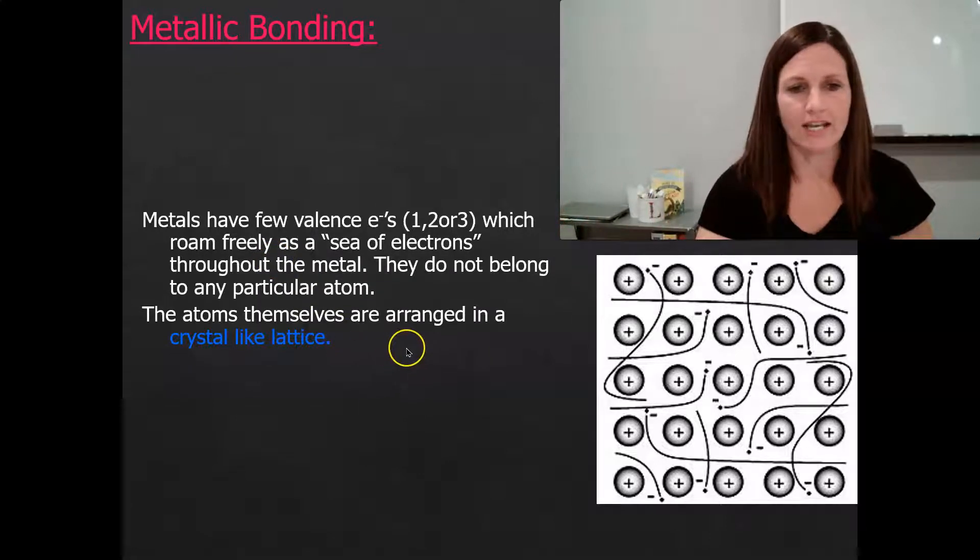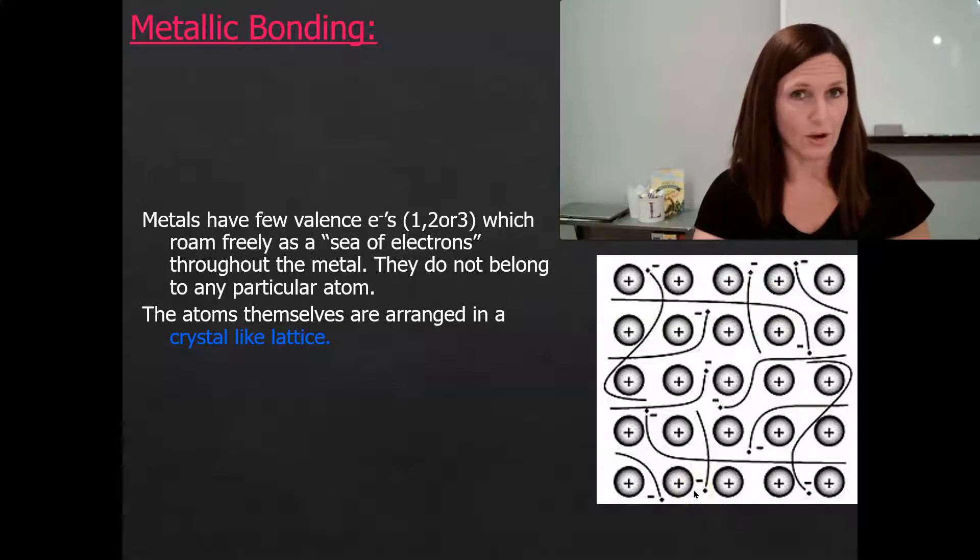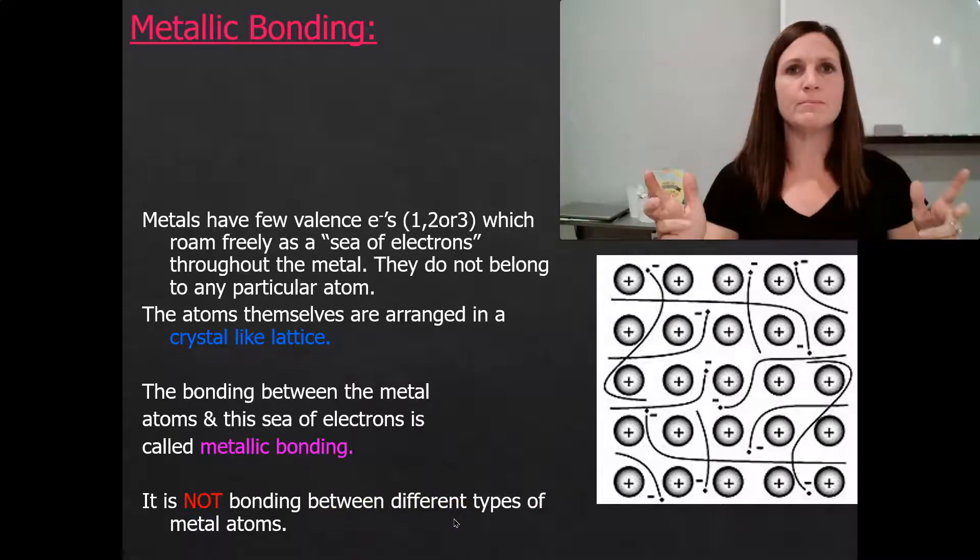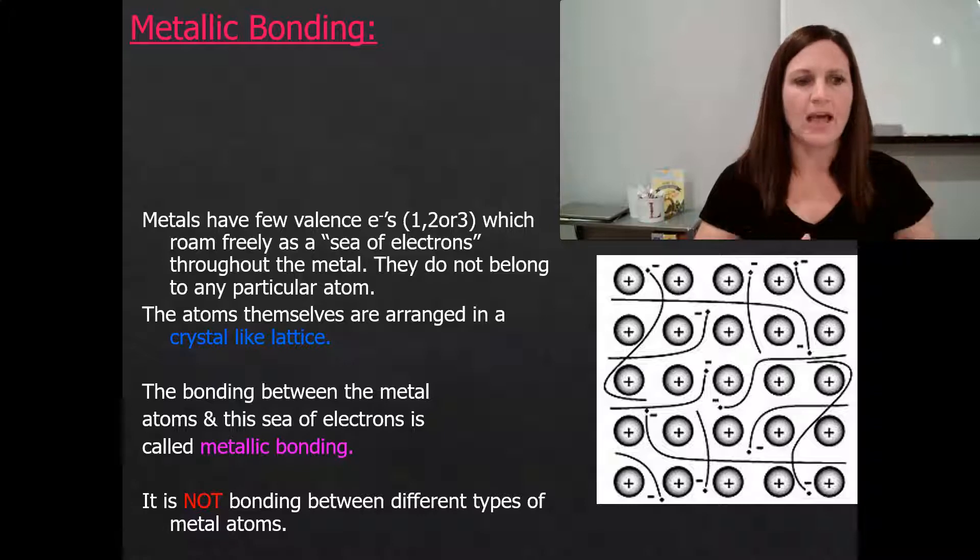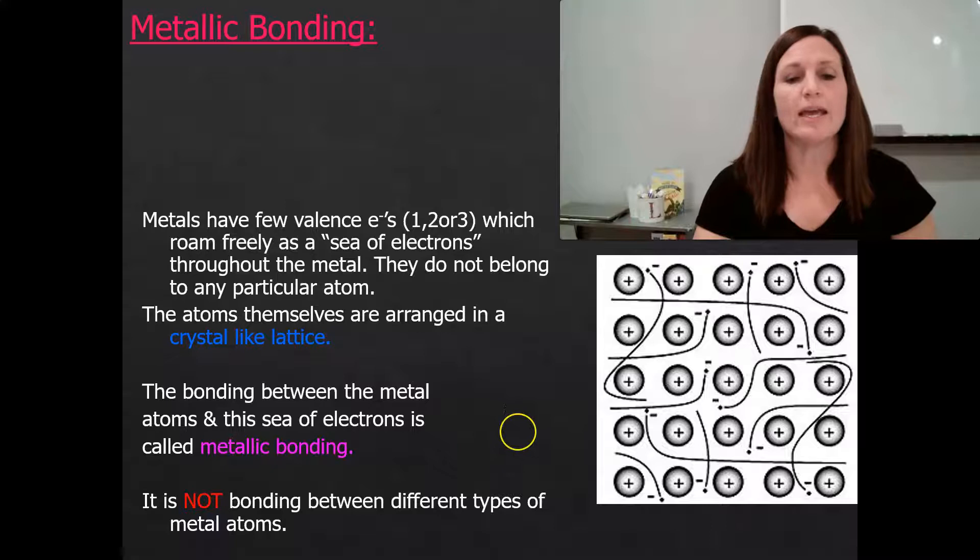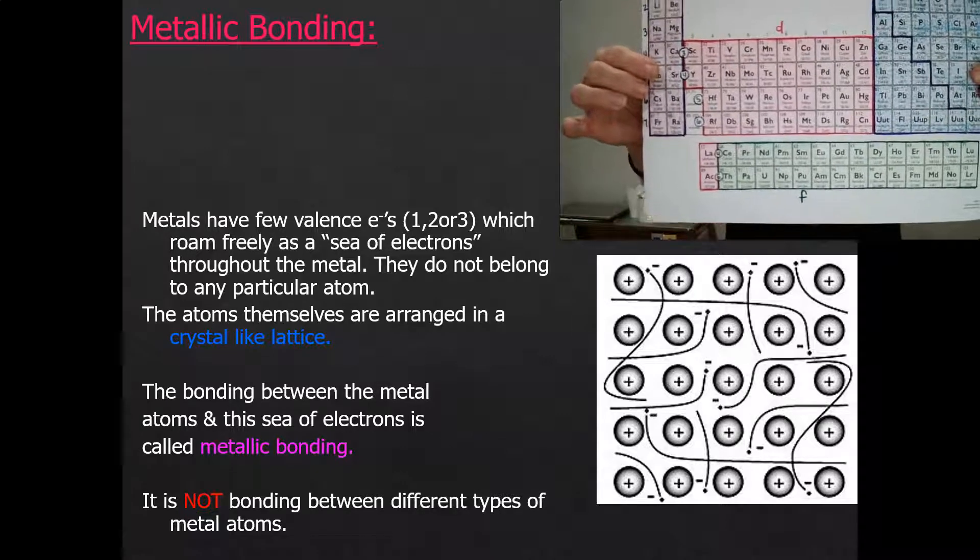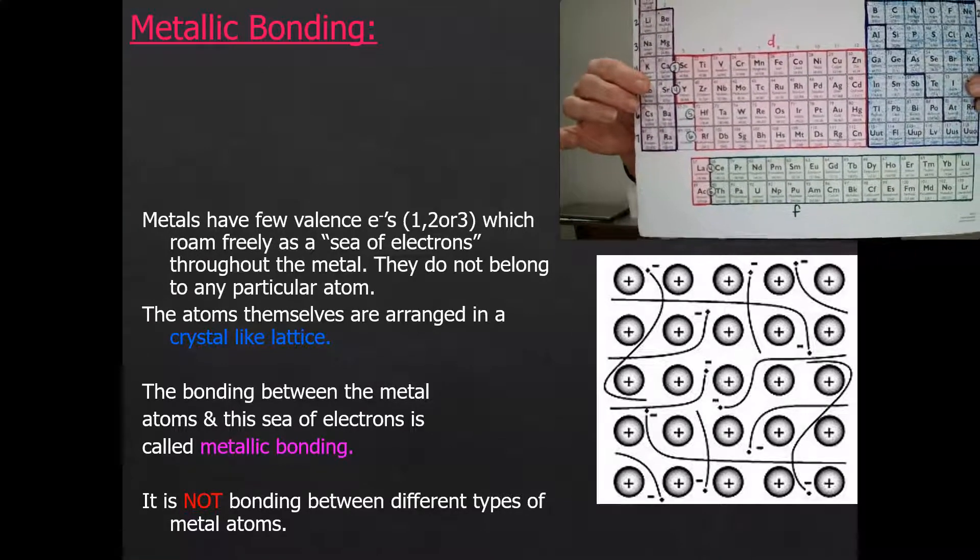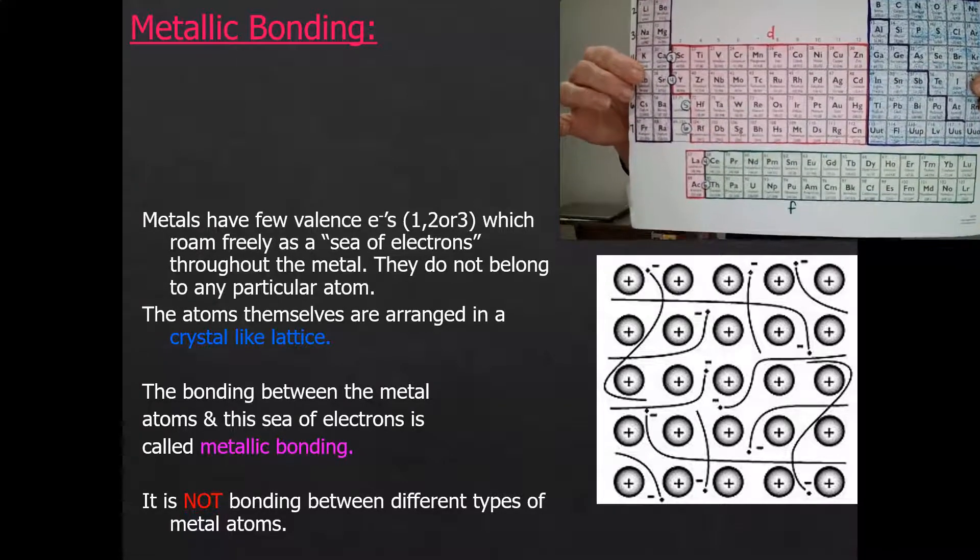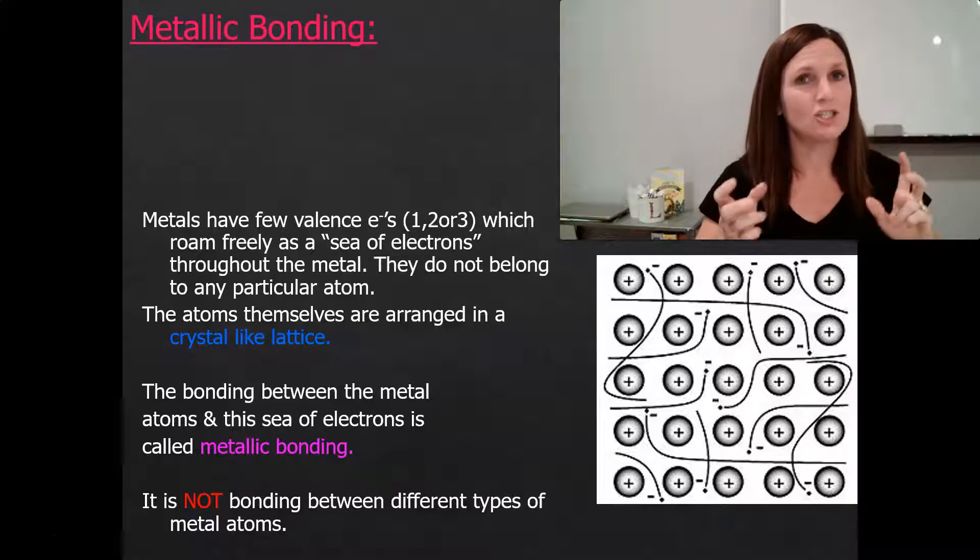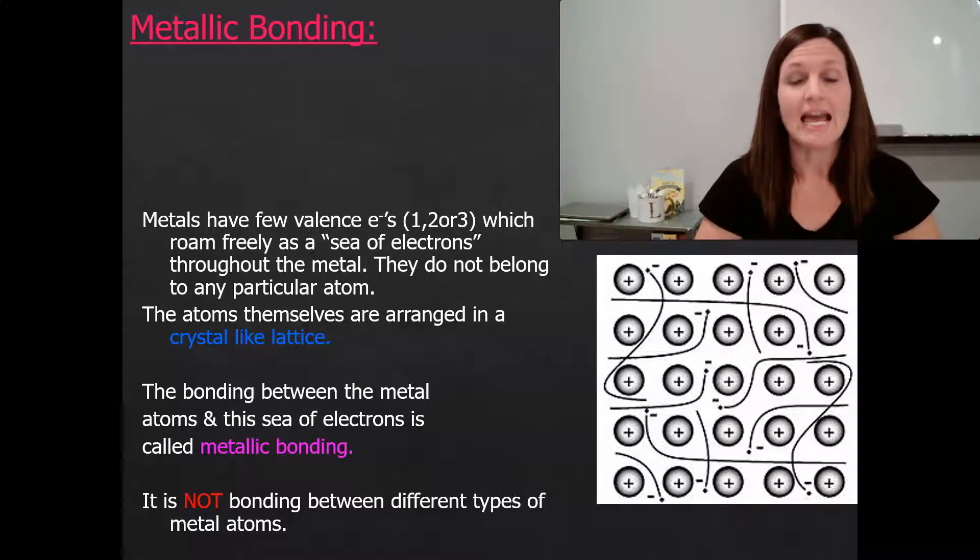Now this is an important distinction. They arrange and it looks kind of like a crystal lattice, but in metallic bonding one of the most important distinctions is that this is not bonding between different types of atoms. This is one type of atom forming all of this metallic bond. So if this were a metallic bond, this would be only iron, or only nickel, or only silver - one of those specific elements, not a mixture. A mixture of metallic elements is something else, and they do not form bonds between them.